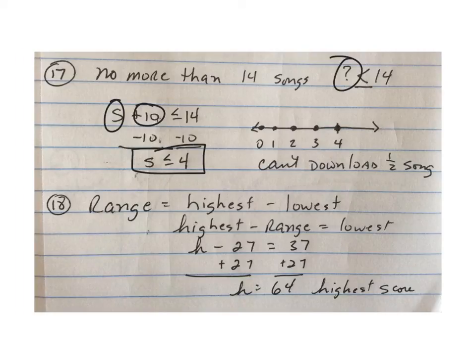Now, the reason why it's not solid like this is because, technically, you really can't download half a song. You either have the song or you don't, so that's why they're solid dots instead of a solid line.